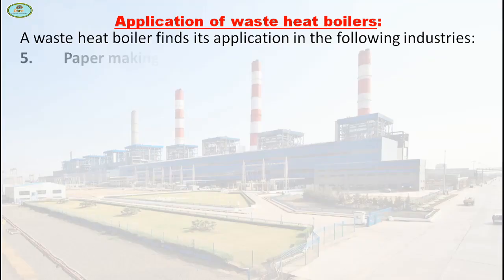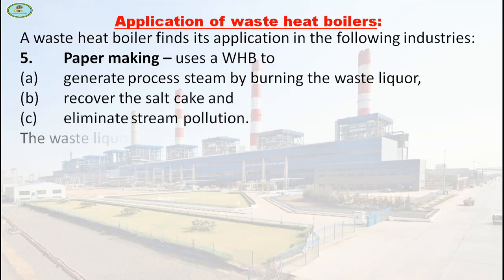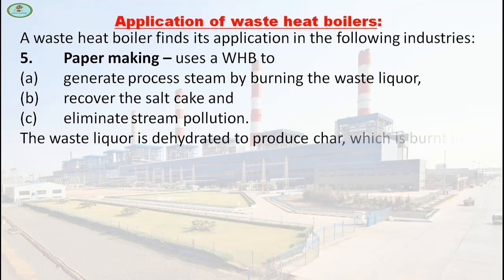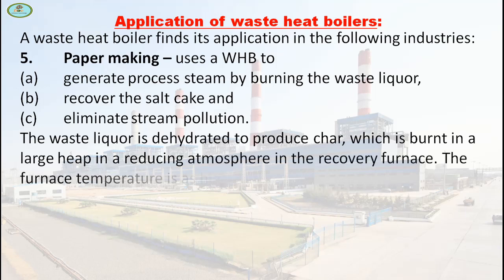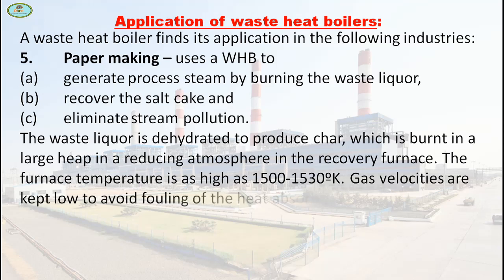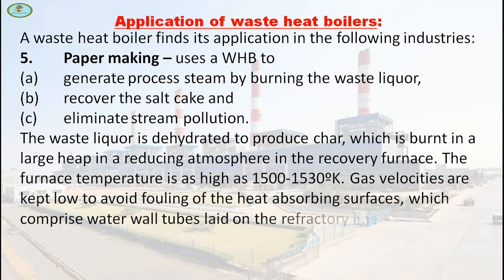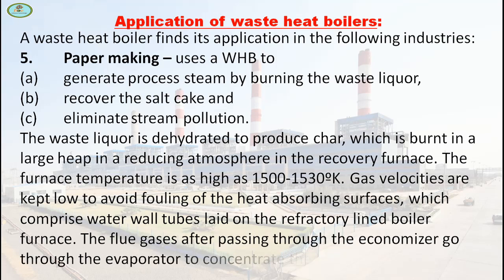Next is paper making. It uses a WHB to generate process steam by burning the waste liquid, recover the salt cake and eliminate stream pollution. The waste liquid is dehydrated to produce char, which is burnt in a reducing atmosphere in the recovery furnace. The furnace temperature is as high as 1500 to 1530 Kelvin. Gas velocities are kept low to avoid fouling of heat-absorbing surfaces, which comprise water wall tubes lined on the refractory-lined boiler furnace. The flue gases after passing through the economizer go through the evaporator to concentrate the black liquid.